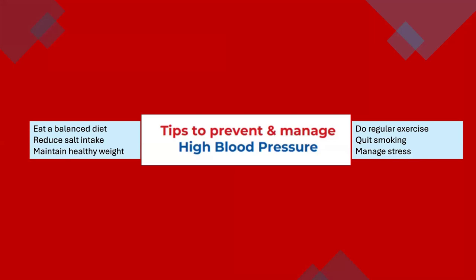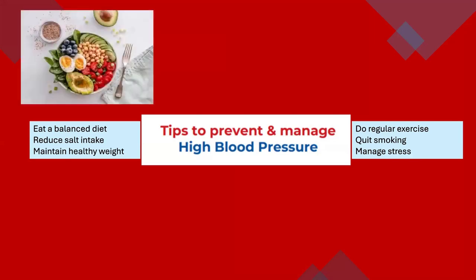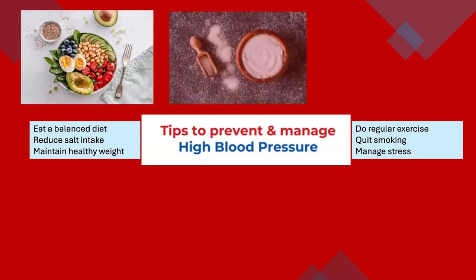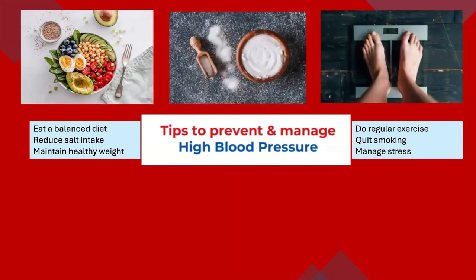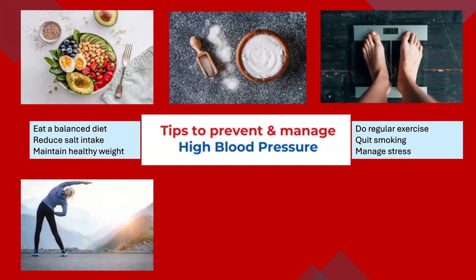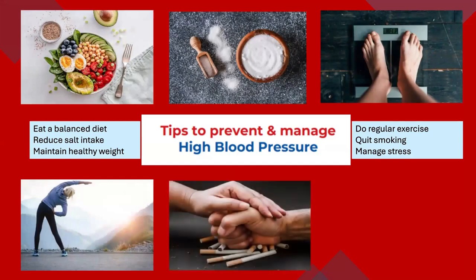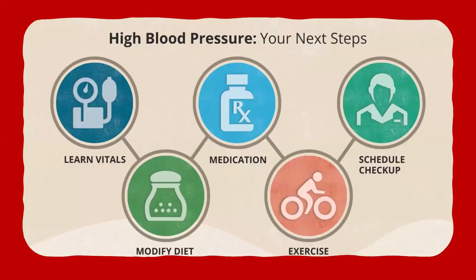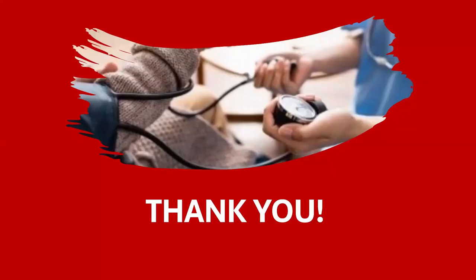In order to prevent and manage high blood pressure, steps include eating a balanced diet, reducing salt intake, maintaining a healthy weight, regular exercise, no smoking, and management of stress. But if you have hypertension, your next steps should be learning to take vitals, dietary modification, medications, exercise, and scheduled checkups. Follow these steps and keep yourself safe from hypertension.